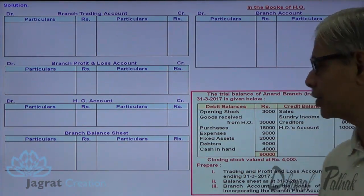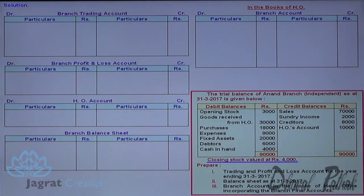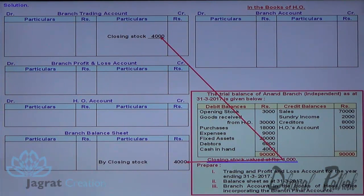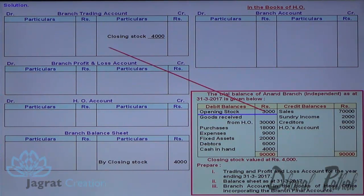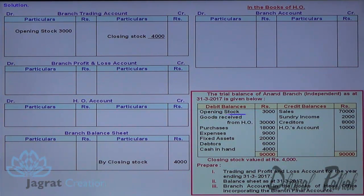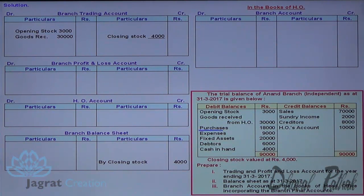Closing stock goes to the trading account credit side and balance sheet asset side. Opening stock goes to trading account debit side. Goods received from HO, just like purchases, are debited to trading account. Other purchases are also debited to trading account.